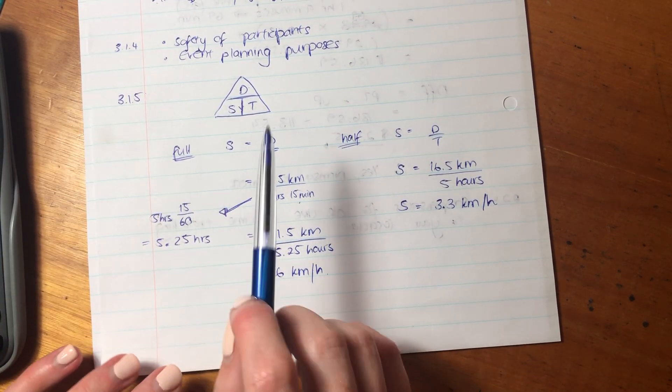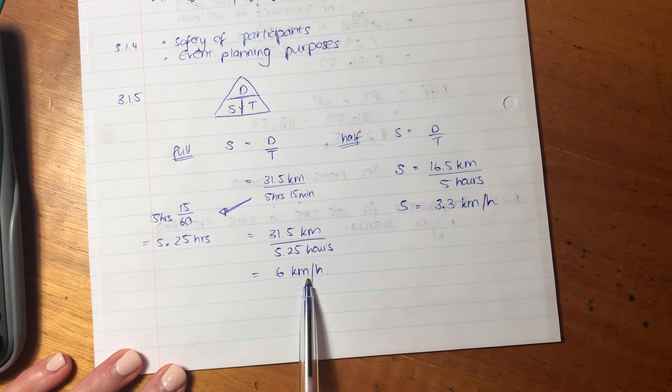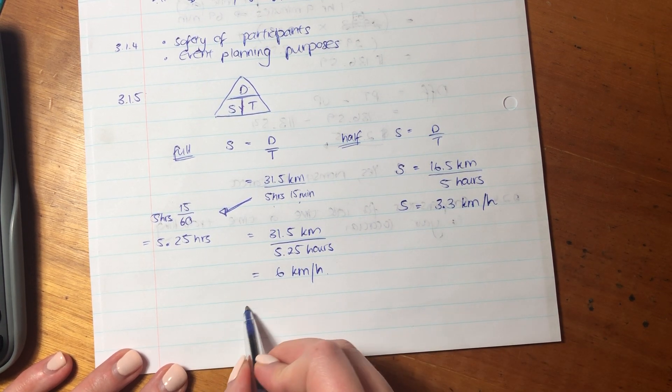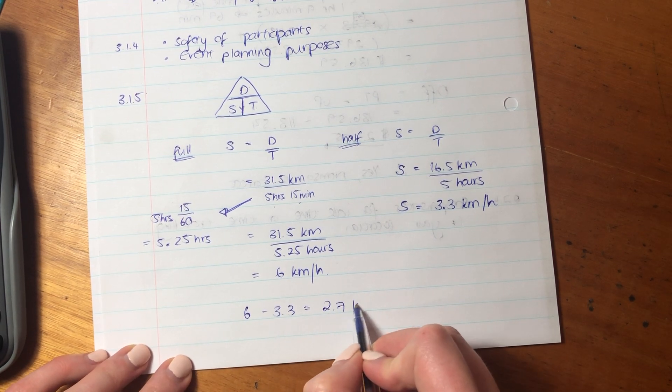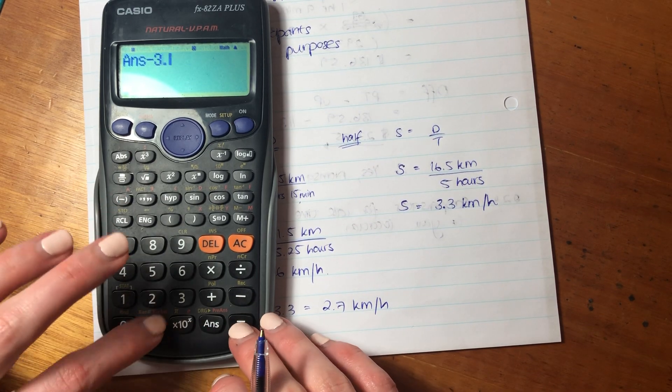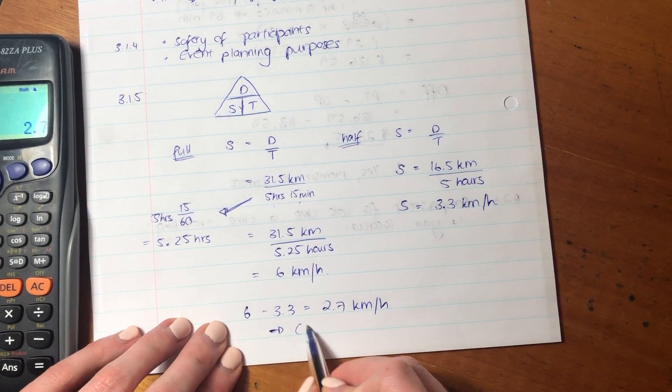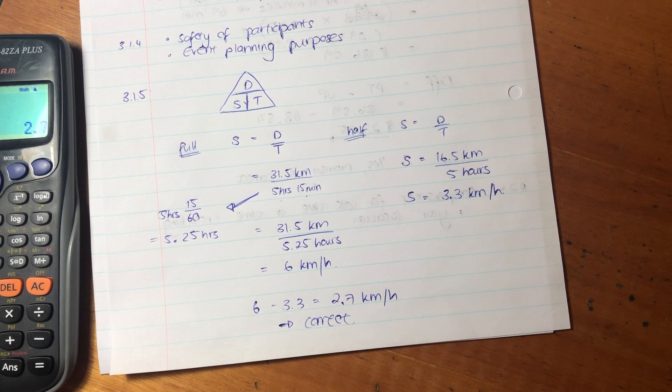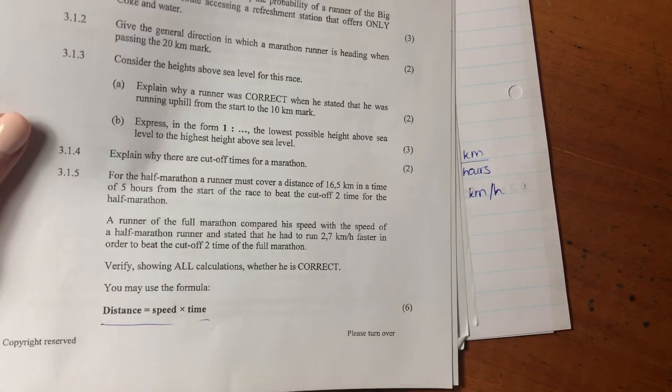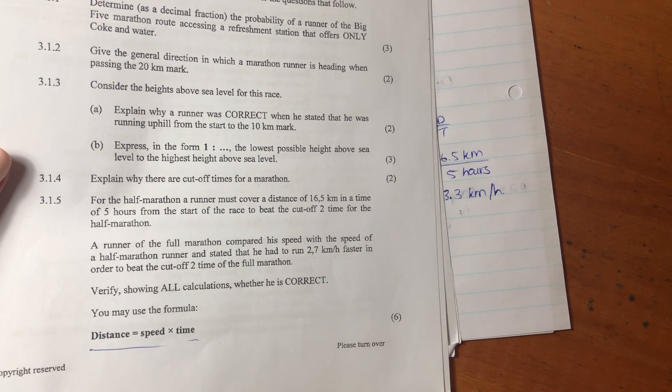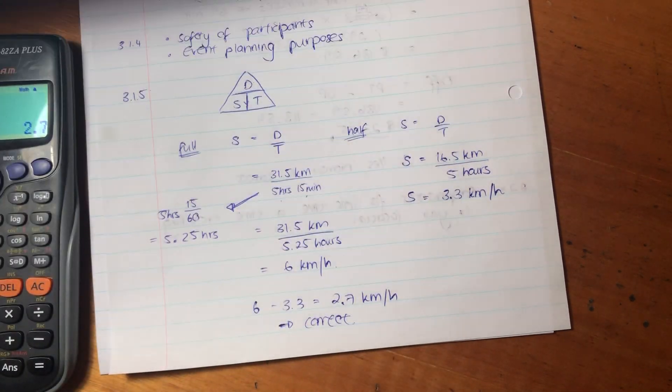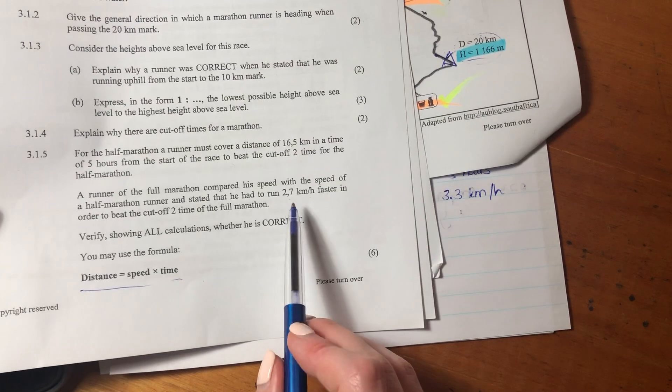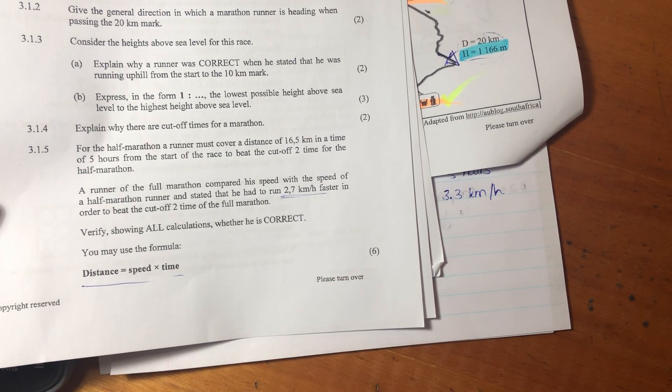So let's now put 31.5 divided by 5.25, and we see that that is 6 kilometers per hour. So this full marathon runner has to run at 6 kilometers per hour to meet cutoff two. This half marathon runner has to run at 3.3 kilometers per hour to meet cutoff two. So the difference here is if you put that into your calculator, 6 minus 3.3. So yes, this runner is correct in saying that if you're doing the full marathon, yes, you do have to run 2.7 kilometers per hour faster than someone who is doing the half marathon to meet the cutoff time.